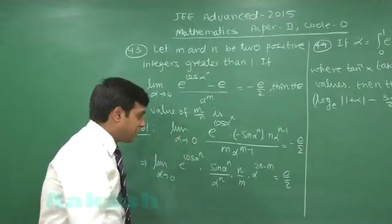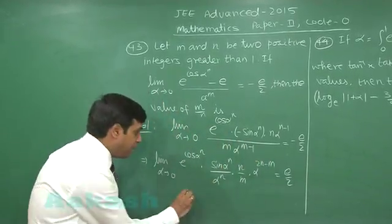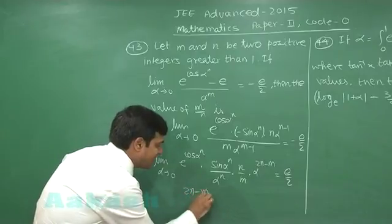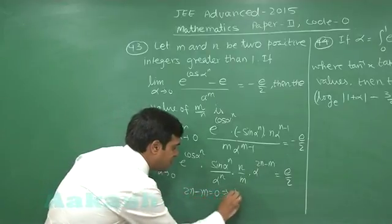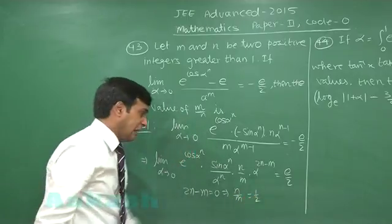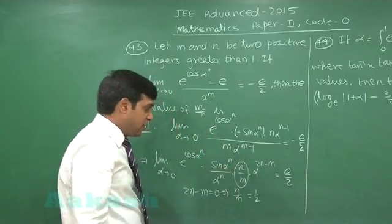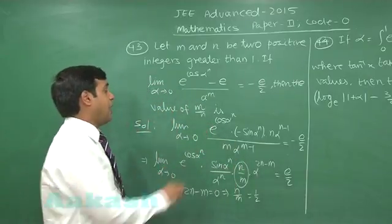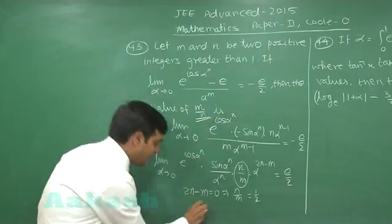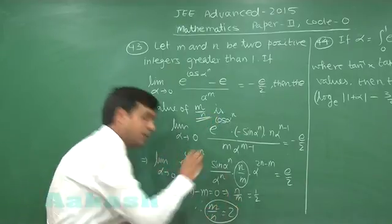Clearly, from this expression, I can observe 2n minus m must be 0. If I plan for 2n minus m equals 0, that gives me n by m is half. Also, I require from this term n by m should be half. So clearly n by m is half. I am looking for the value of m by n, so the term m by n is 2, correct?